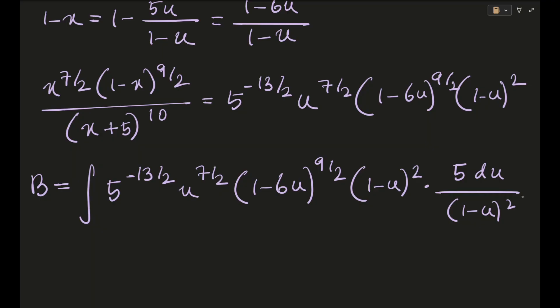So this will come out to be integral 5^(-13/2) u^(7/2) (1-6u)^(9/2) into (1-u)^2 and this will be multiplied by your 5 du/(1-u)^2. So magically enough this and this gets cancelled. So this will become integral of your 5^(-11/2) and I guess this will be u^(7/2) only (1-6u)^(9/2) and this is du. Okay, so this is actually B.